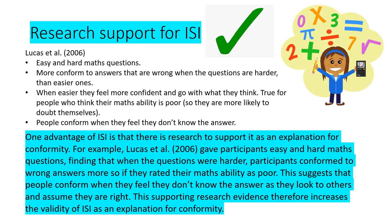In this case, Lucas found that participants were given easy and hard maths questions. When the questions are hard, there is greater conformity to wrong answers than when questions are easy. This is because with easier questions people feel more confident and go with what they genuinely think. This was especially true for people who rated their maths ability as poor — they were more likely to doubt themselves. When questions were hard, they went along with other people and were wrong. So people conform when they don't know the answer.